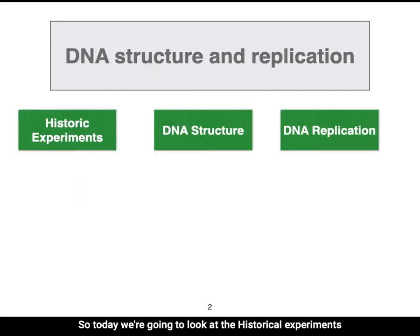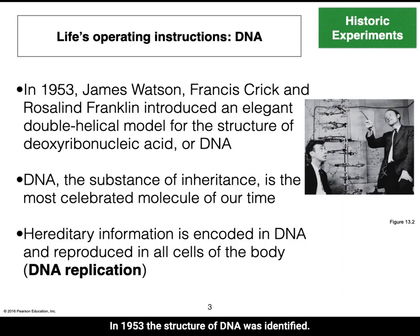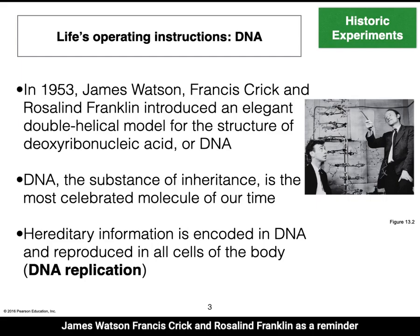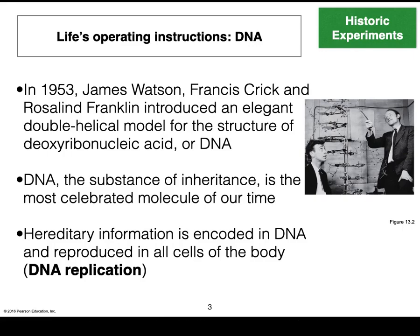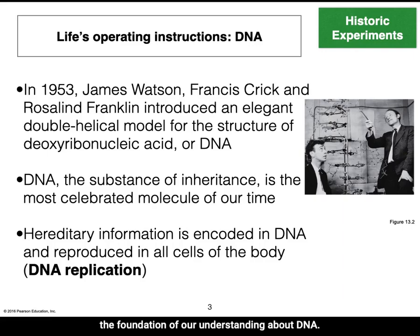Today, we're going to look at the historical experiments that led us to our understanding of inheritance and DNA replication. In 1953, the structure of DNA was identified. This was made possible by the work of many scientists, including James Watson, Francis Crick, and Rosalind Franklin. DNA, or deoxyribonucleic acid, is the substance of inheritance. Inheritable information is enclosed in DNA and reproduced in all cells of the body — a process called DNA replication.